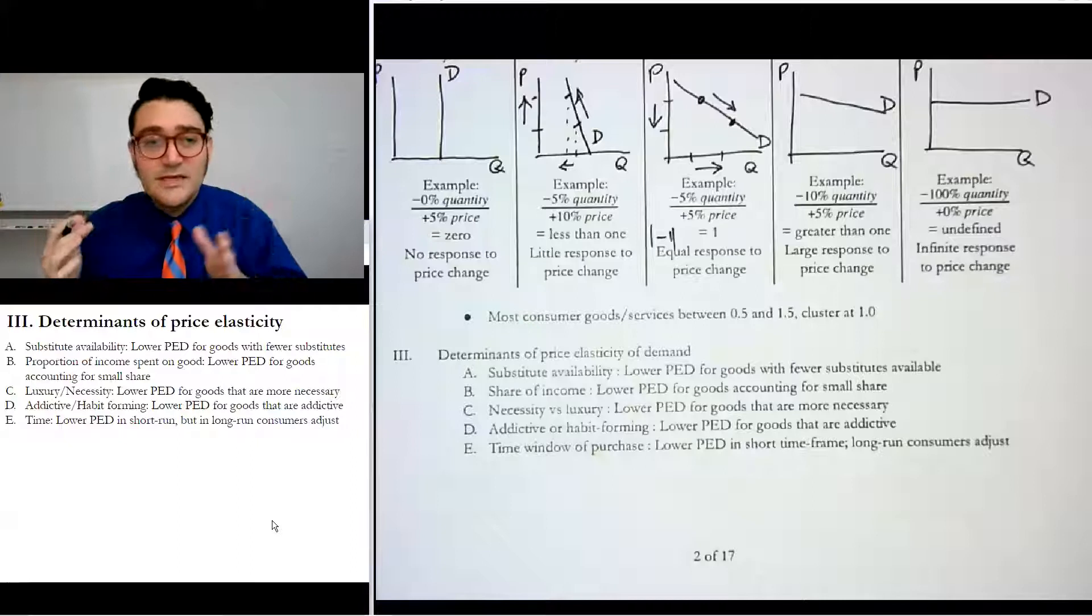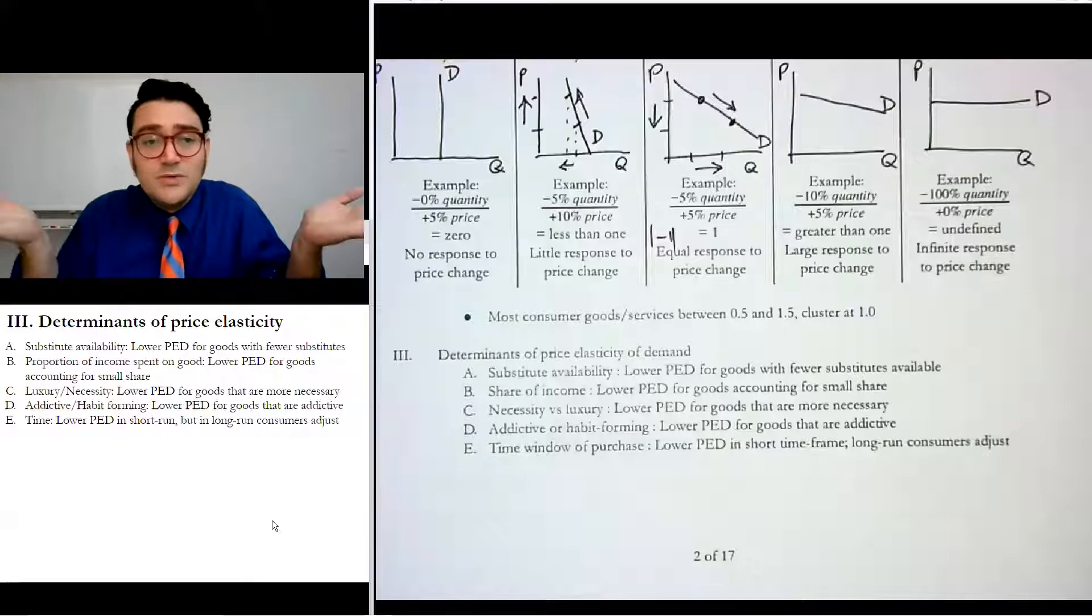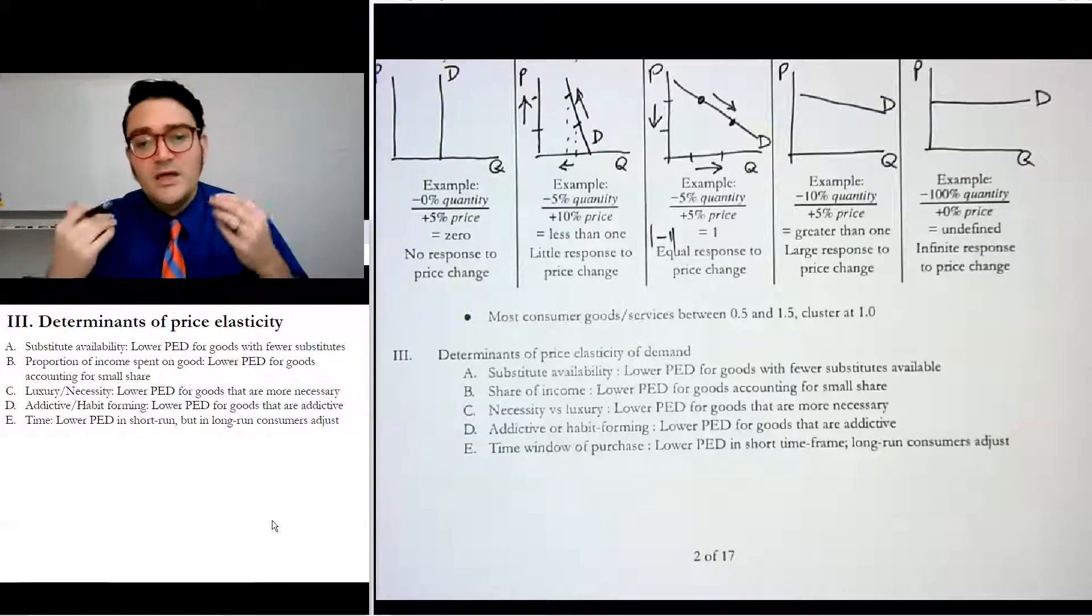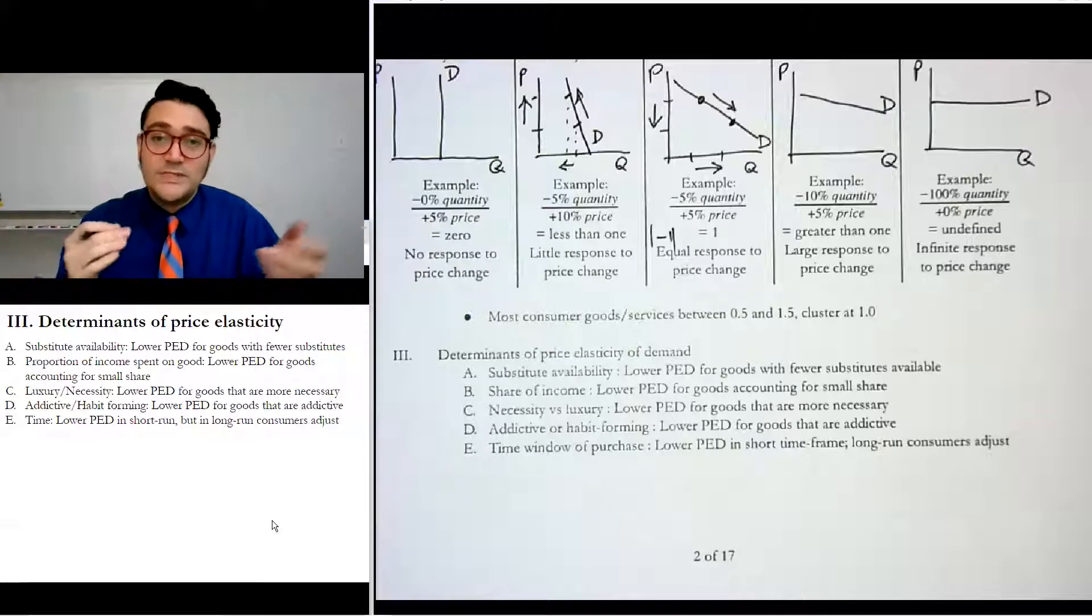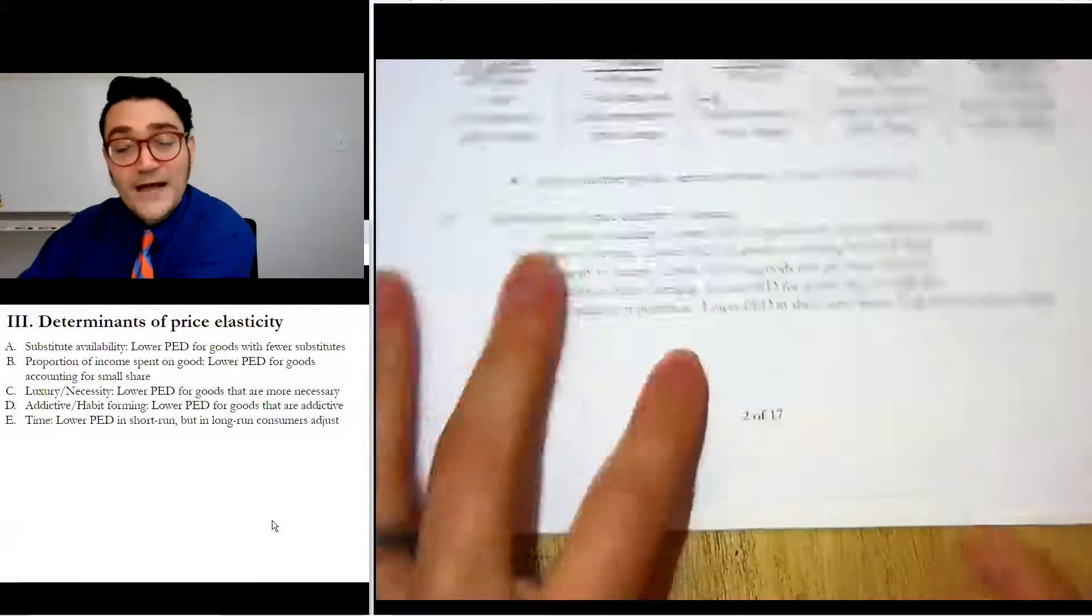Necessity versus luxury is another one, where if it's needed, then you're going to have really pretty low elasticity or very inelastic. But if it's a luxury product, people will go, I don't really need it this time. I'll wait until the price changes. If it's addictive or habit forming, typically we would say those have really low elasticity values as well. I mentioned heroin earlier. Here's a good example of why that matters.